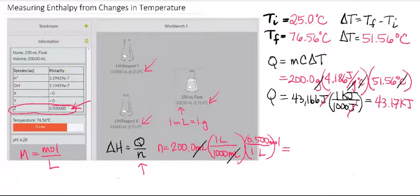So the milliliters cancels, the liters cancels. And then when we solve this, we get a total of 0.100 moles of our product.